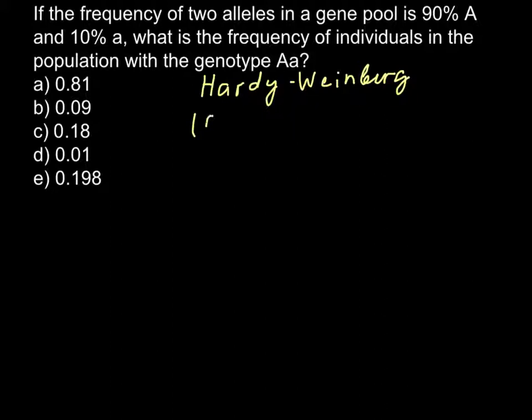For example, A plus B squared equals A squared plus 2AB plus B squared. In genetics we use a slightly different abbreviation.